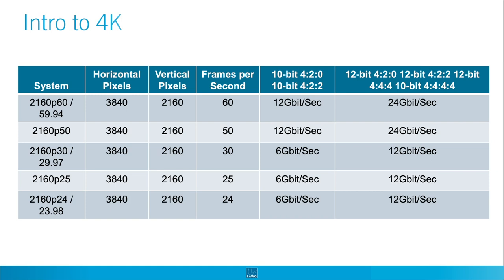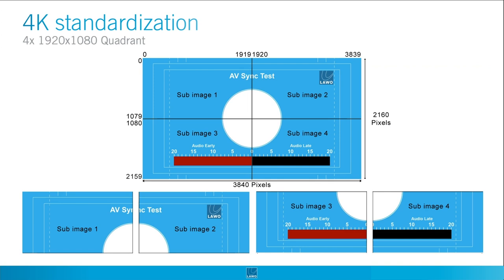The C100 supports 3840 by 2160 Ultra HD broadcast formats in 2SI or 12G. There actually exist two families of 4K formats. You have Ultra HD TV1, or simply Ultra HD, which is 3840 by 2160 pixels, and it is the 4K resolution issued from the broadcast television world, corresponding to 4 times the resolution of an HD picture.